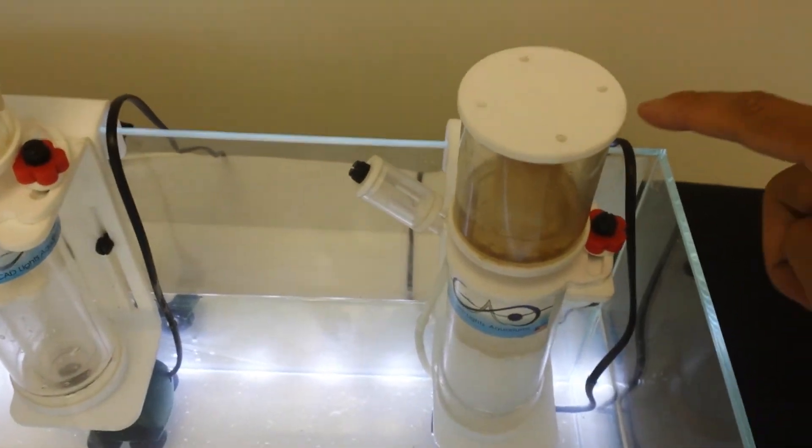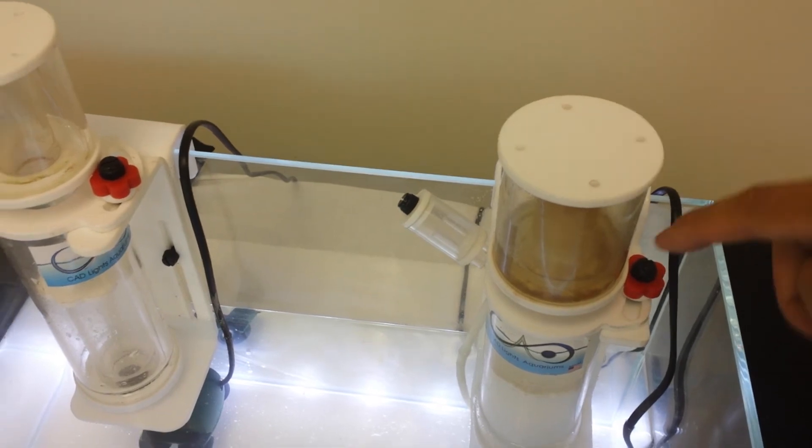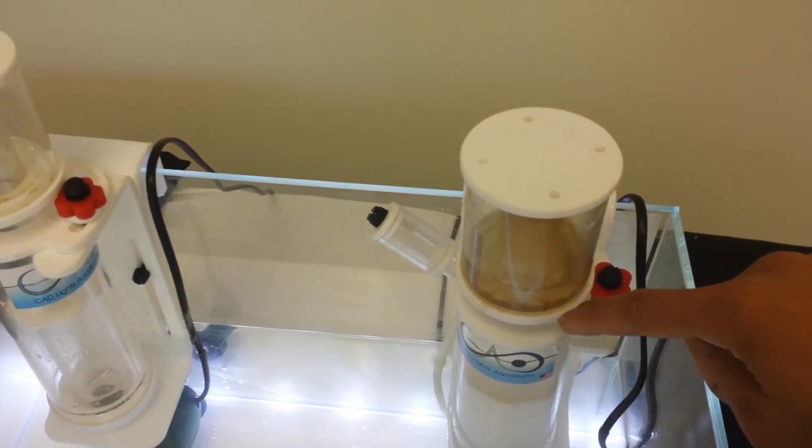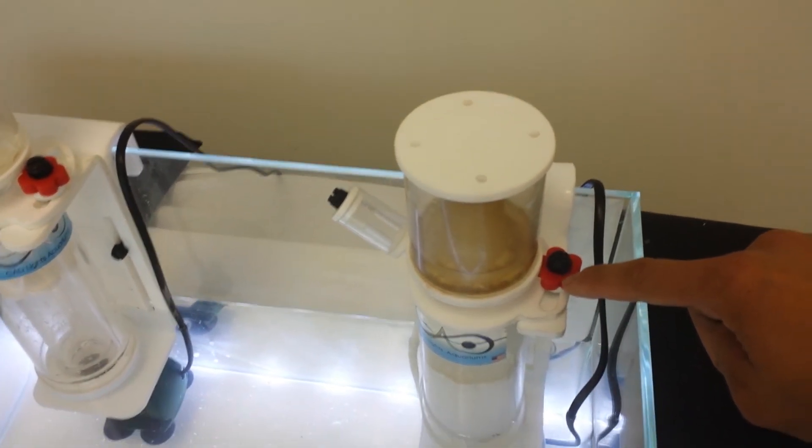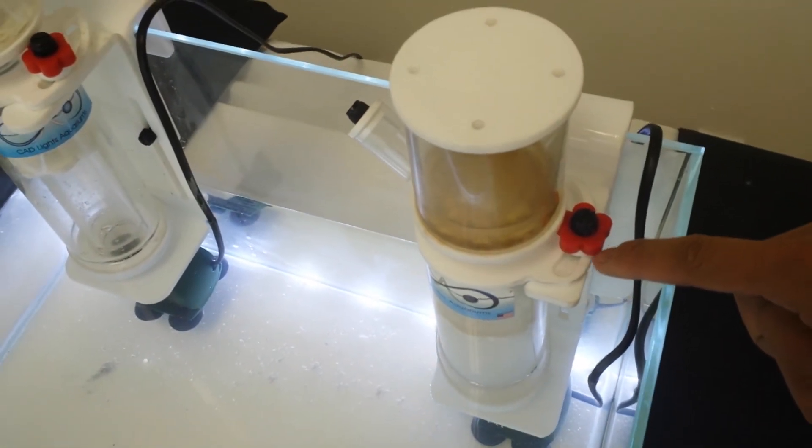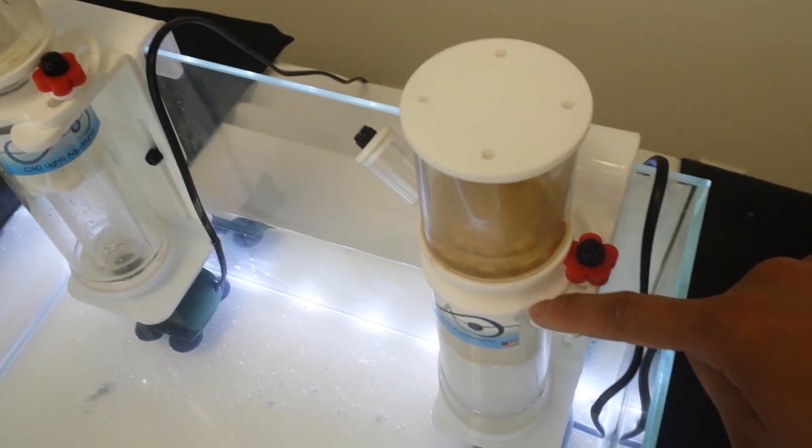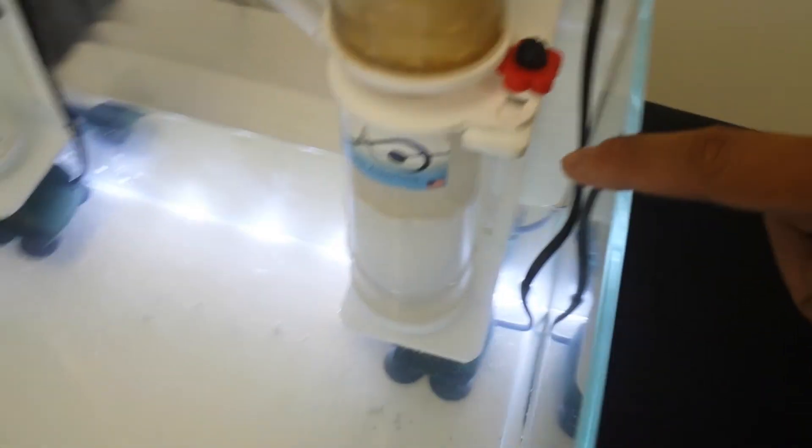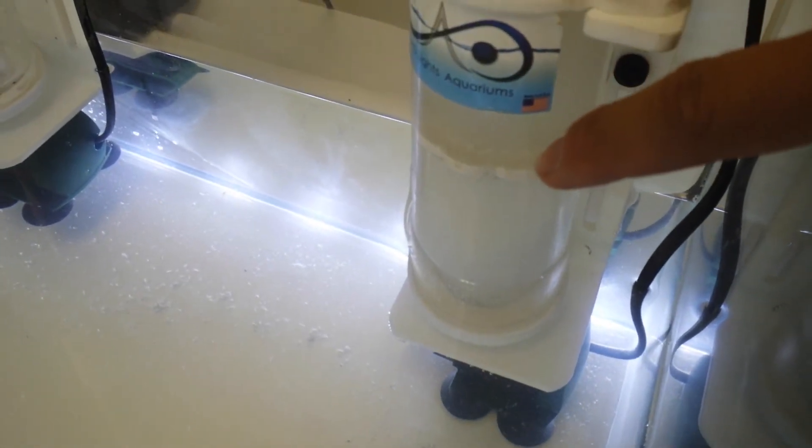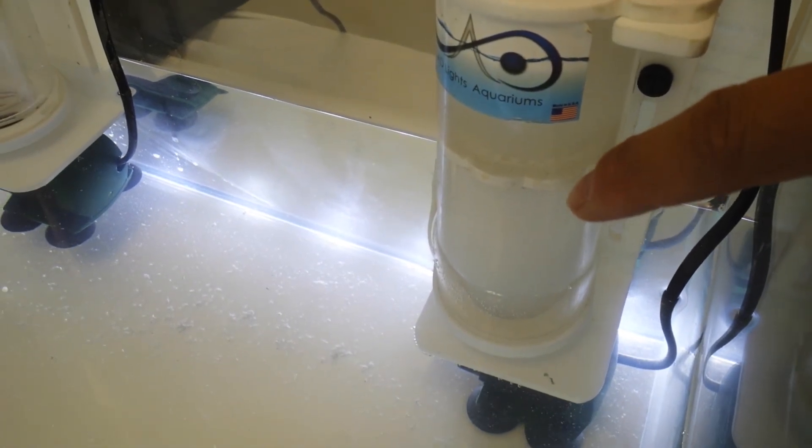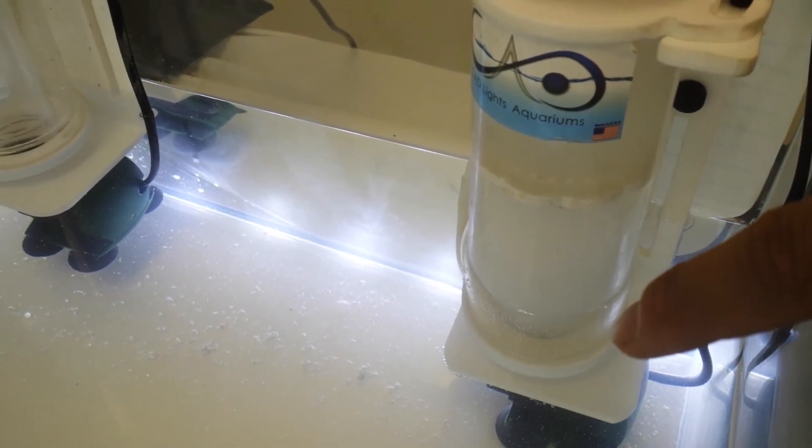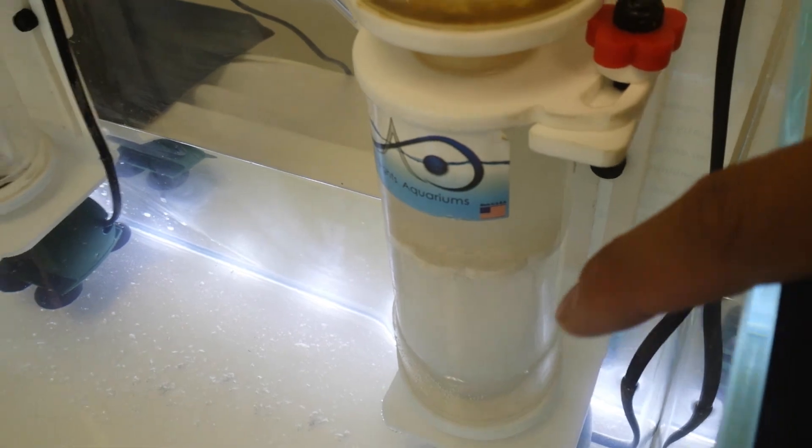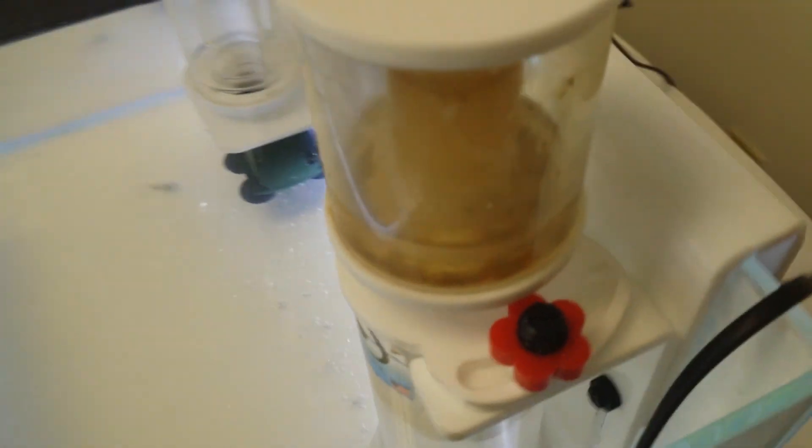We have the collection cup, the base of the collection cup, the red control knob, the collar of the skimmer body, the silencer, and the internal bubble plate, the drain on the bottom, and the rear tank mount which goes towards the back like this.